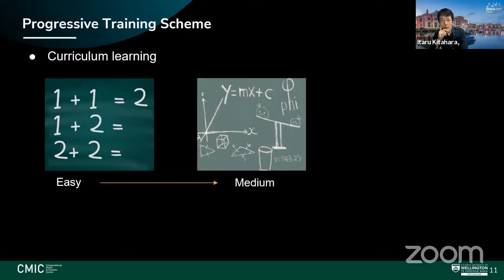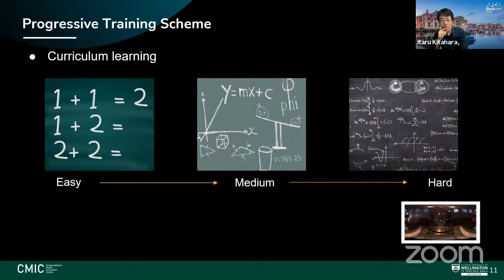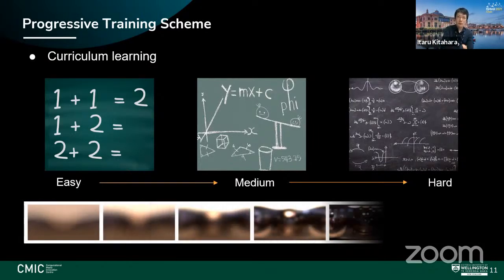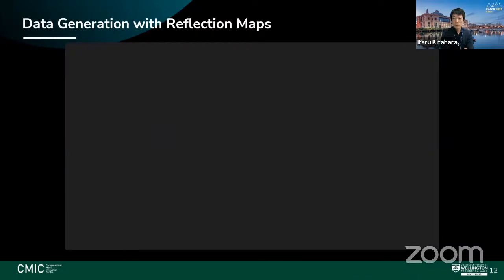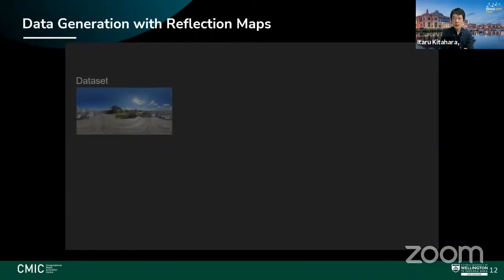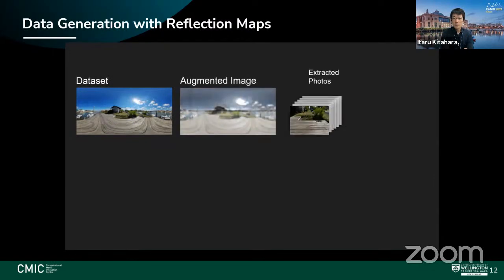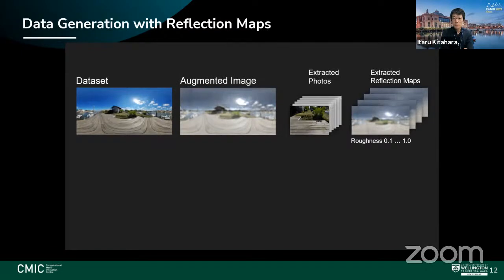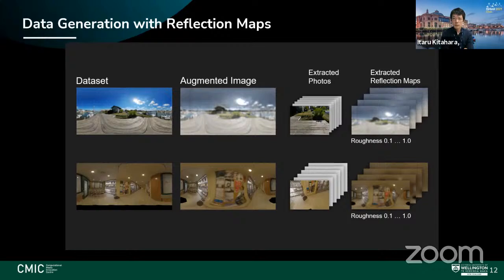Using this data, we train the network: a new photograph is input to the CNN, which estimates the low-roughness radiance map, then used in a rendering engine to render different materials. We improve on the basic setup by introducing progressive training using curriculum learning — training on easy examples first, then gradually harder ones. The mirror-like reflection map is the hard case; the diffuse map is the easy case. We progressively train from high roughness (1.0) down to low roughness (0.1), using a discrete set of roughness levels.